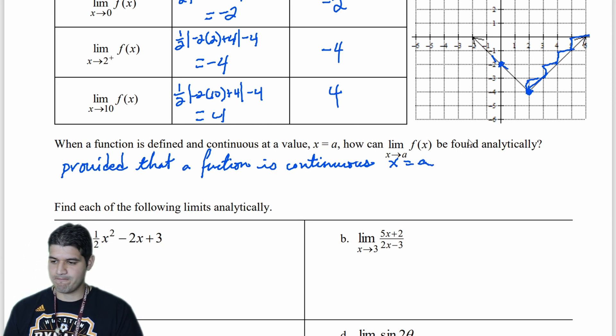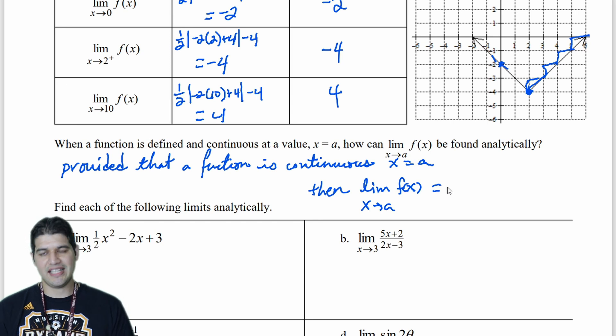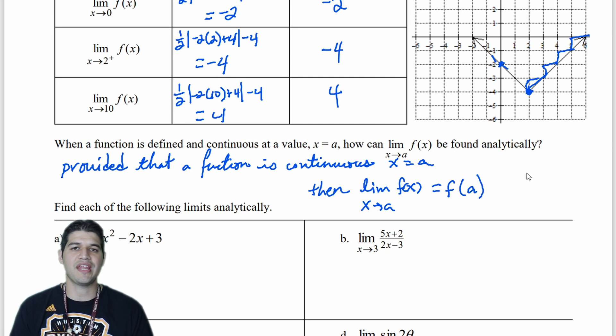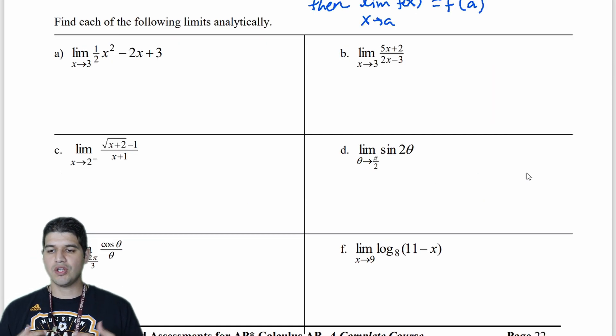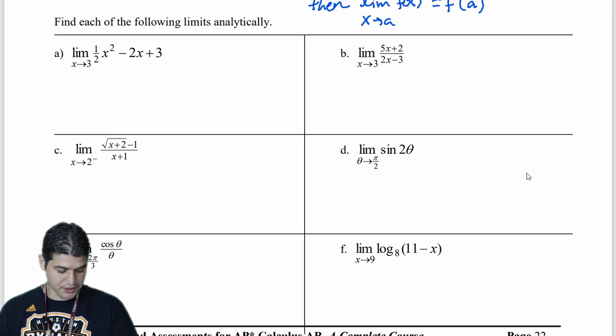So then the limit of f of x as x approaches a is equal just to the function at a. So it's equal to f of a. So all we have to do is substitute that value in, as you can see from our table where we're doing that right there. So now that we're looking at some of these problems, we're going to still continue to find just using that simple property of substituting those values in. So let's go ahead and do that first.